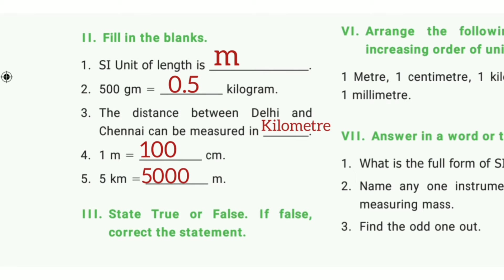Fill in the blanks. First one: The SI unit of length is dash. The answer is meter. Second one: 500 grams equal to dash kilograms. The answer is 0.5 kilogram.